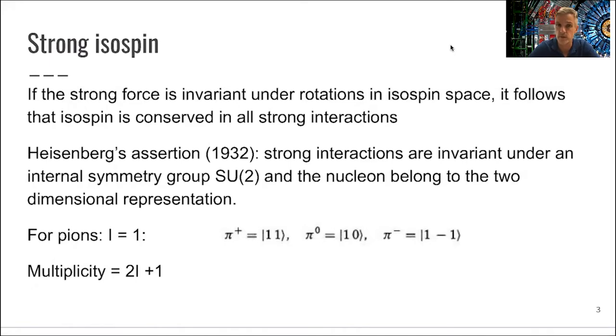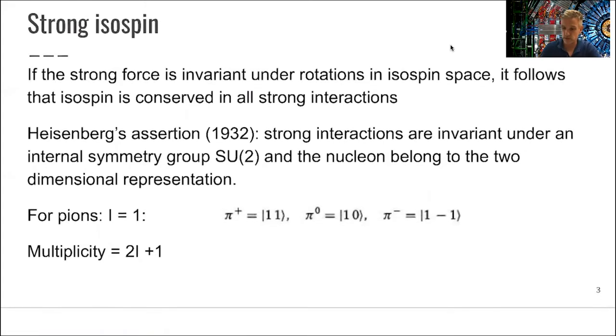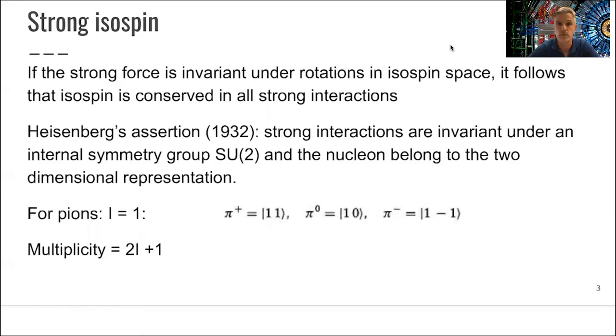So this was proposed in the 1930s. Again, we notice the symmetry in nature, and from that symmetry, the conservation law follows. And we can conclude physics cross-sections or ratios of cross-sections from it without understanding, in this case, QCD, the strong interaction. But this is very fascinating. And you can just apply this concept now to other particles, for example, the pion.